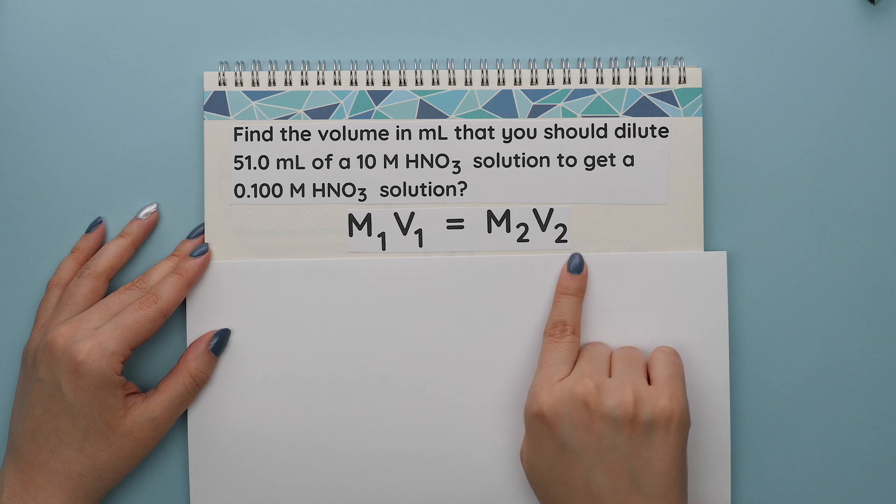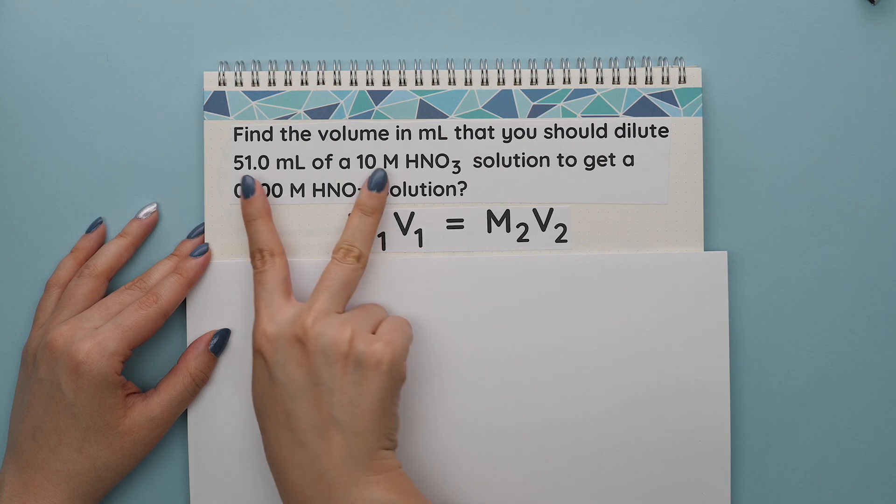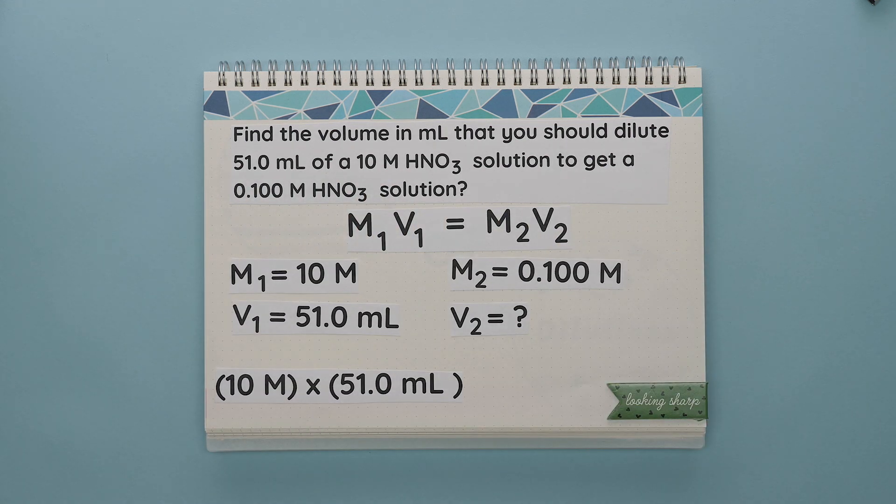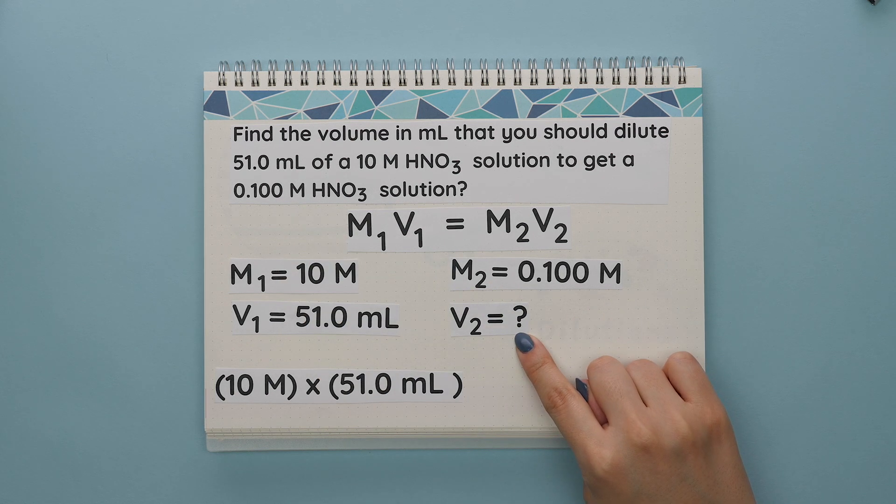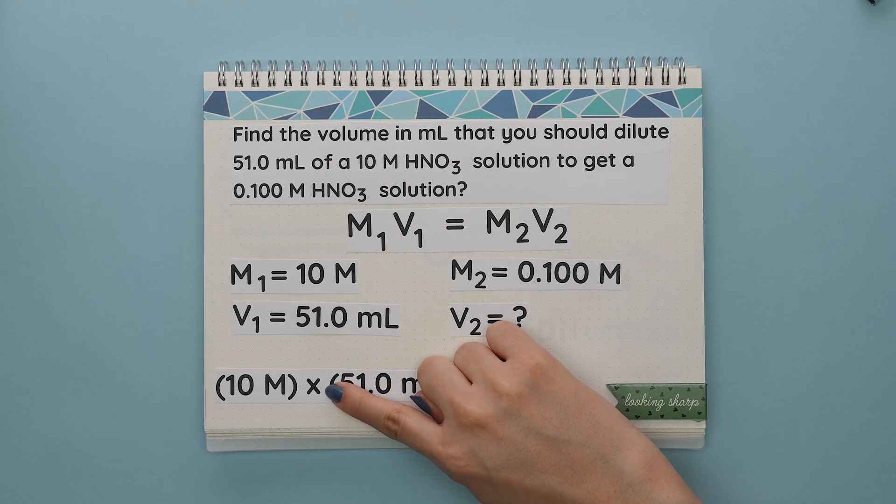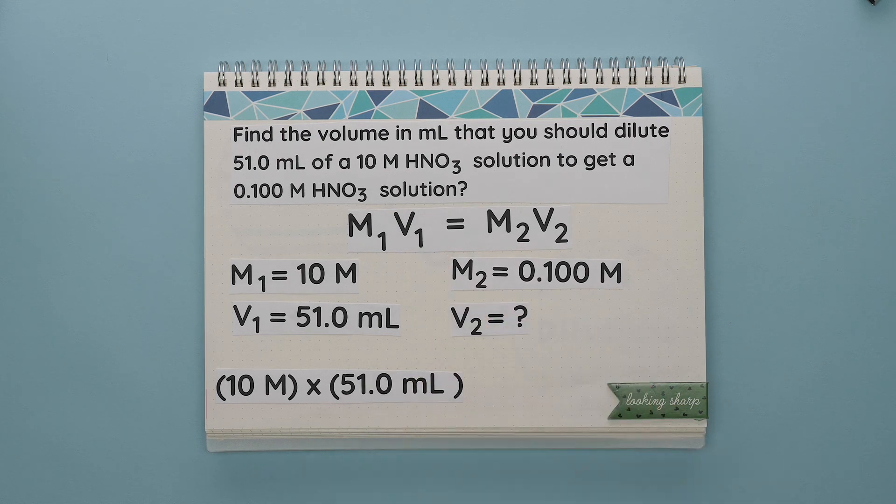Next, label which values are M1, V1, M2, and V2. The word of tells you to keep these two together, meaning these are your initial molarity and volume. So this other molarity has to be our M2 and we are solving for V2. Remember that the word of often refers to multiplication, which is exactly what happens here. In the formula, we are multiplying these two numbers together.